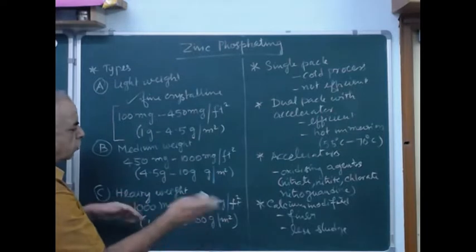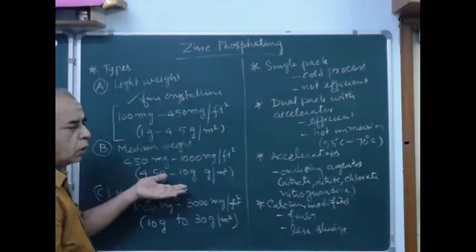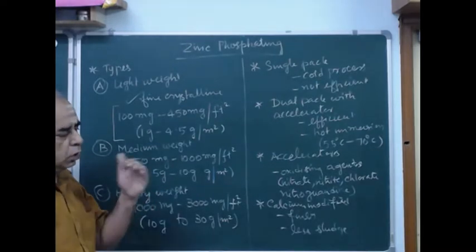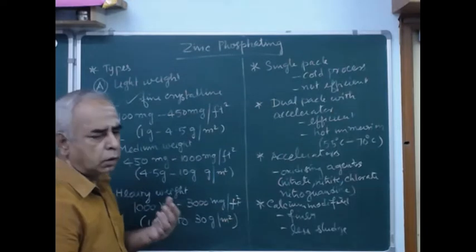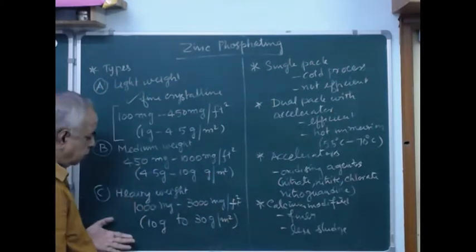These two are applicable for coating industries where after treatment of phosphating, they will give the top coat, the finished coat with liquid paint or powder. The third variety is heavy weight.